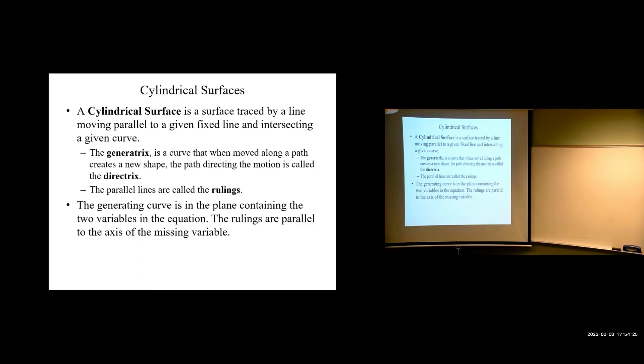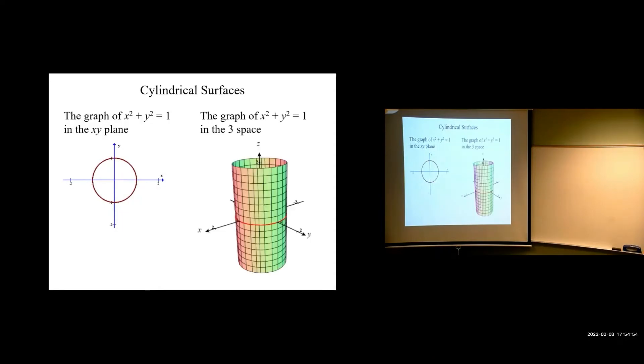So, where you're going to see these is in equations that only have two of the three variables. Remember, the cylinder was x squared plus y squared equals one. Z was missing. So, it was a circle in 2D. When we added that z-axis, all it did was go in the z direction. That's what these cylindrical surfaces are. So, here's kind of an example. We saw x squared plus y squared. There's your generatrix, the circle. And then, these are your rulings, these lines in 3D. That's all that means. Again, you're probably not going to hear me use those terms again all semester generatrix or rulings. But if you happen to see them in a text or something, I want you to just be like, oh, okay. I know what those are. I've seen them before.